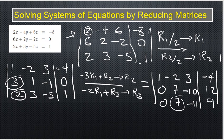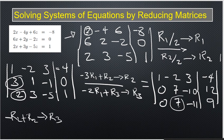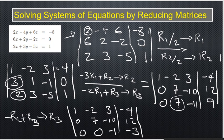Now we need to make the 7 in R3's second entry zero. We compute -R2 + R3 → R3: 0-0=0, -7+7=0, 10+(-11)=-1, -12+9=-3. So the new R3 is [0, 0, -1 | -3]. R1 stays [1, -2, 3 | -4] and R2 stays [0, 7, -10 | 12]. The matrix is now in row echelon form.